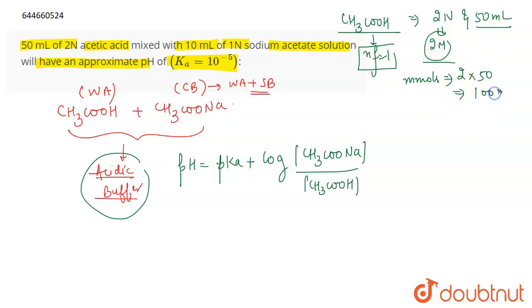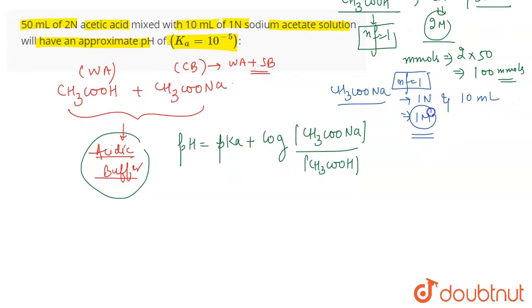And similarly if we talk about sodium acetate which is CH3COONa, for this also you are given 1 normal and 10 ml. So again its normality will be equal to molarity only because for salts the positive charge, the cationic charge gives the n factor. So here Na is in +1 charge therefore the n factor is going to be equal to 1. So this is 1 molar, 10 ml which means that if we talk about the millimoles of sodium acetate this will be 10 into 1 which is 10 millimoles.